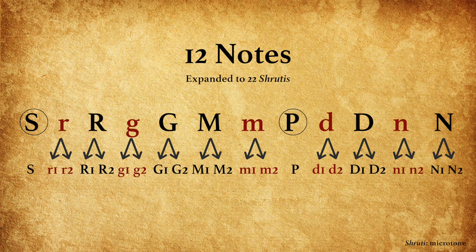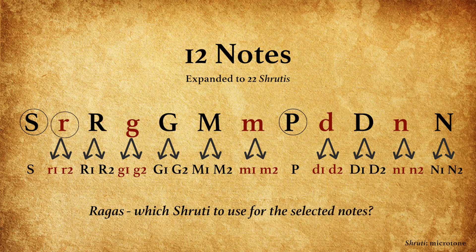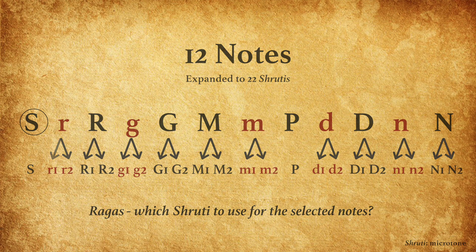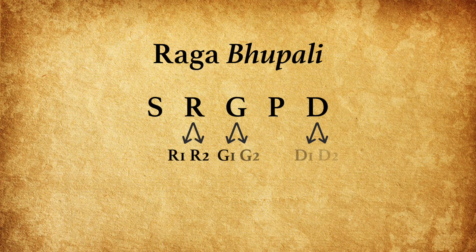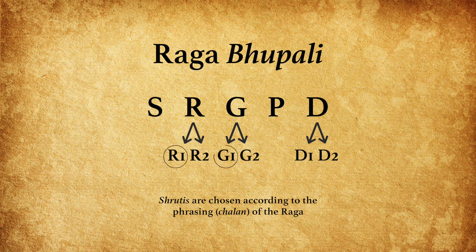In Indian classical music, we have various scales called Ragas. Depending on the notes of the Raga, we decide which variant of the note to use. If the note is Komal Re, then which Komal Re — R1 or R2? If the Raga has Shuddha Ga, then which variant — Ga1 or Ga2? For instance, let's take Raga Bhupali — it has five notes: Sa, Re, Ga, Pa, Dha. Sa and Pa don't have variants, so in Re, Ga, and Dha, the Shruti is chosen according to the phrasing of the Raga. We choose R1, Ga1, and Dha1.